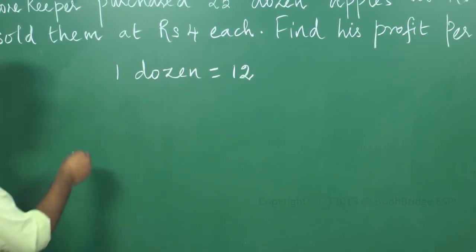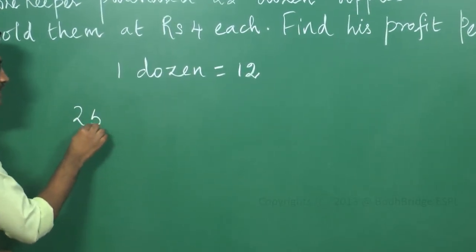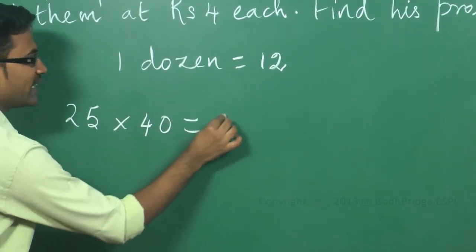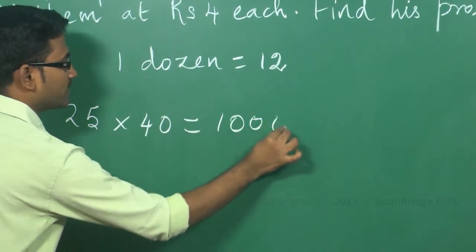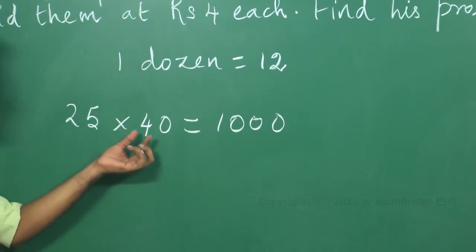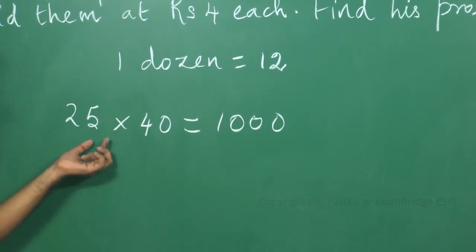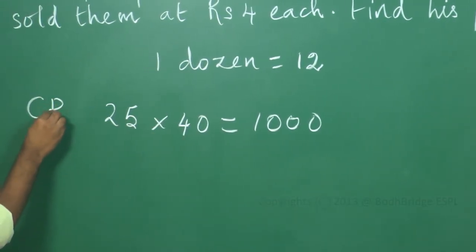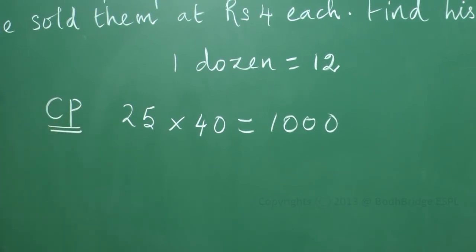Now, he is purchasing 25 dozens for Rs. 40 per dozen, so he is incurring Rs. 1000. He is investing Rs. 40 for each dozen. So, 25 into 40 equals Rs. 1000, which is the cost price because this is the investment made by him for the apples.